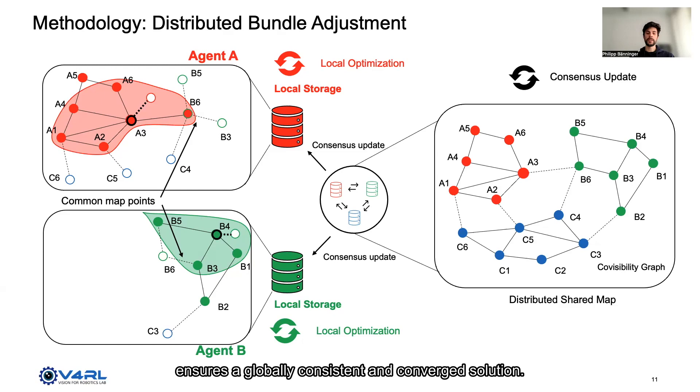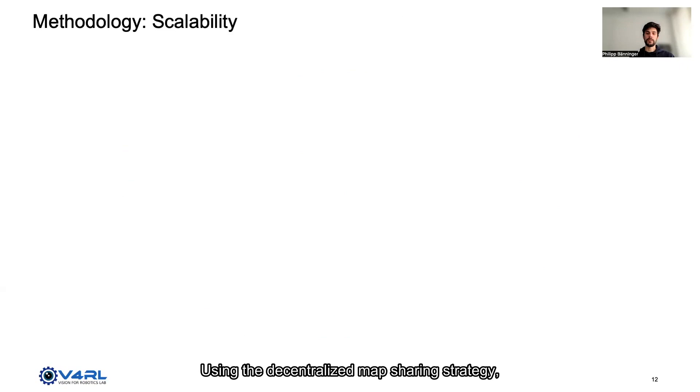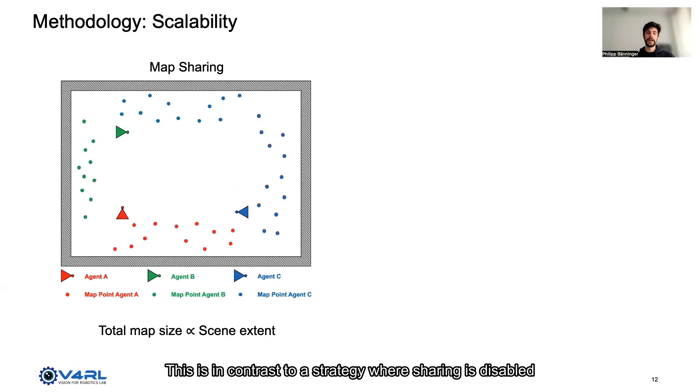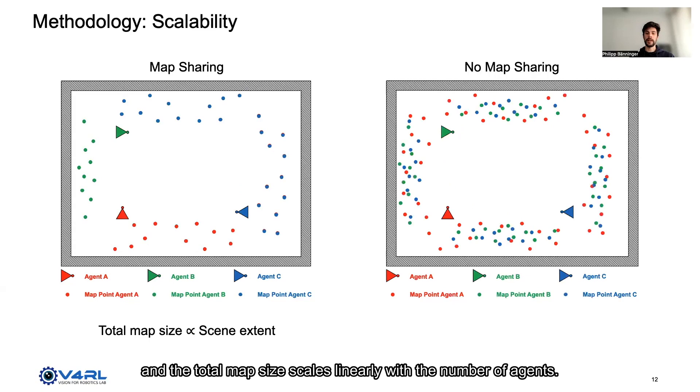Using the decentralized map sharing strategy, we achieve a total map size that remains proportional to the scene content. This is in contrast to a strategy where sharing is disabled and the total map size scales linearly with the number of agents.